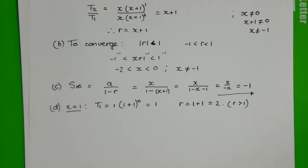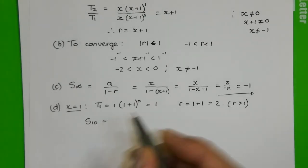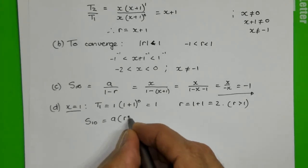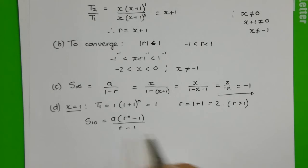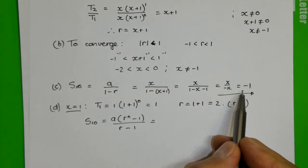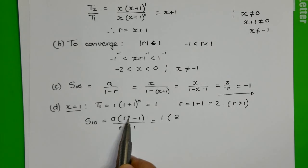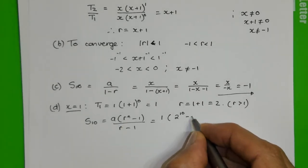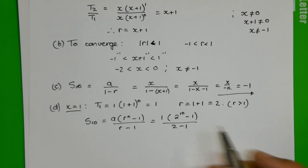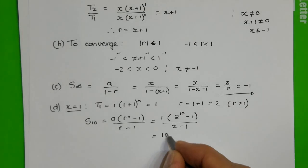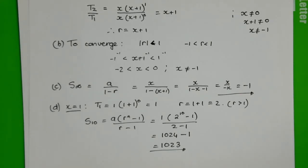So to find the sum to 10 terms, the sum to 10 terms will be the first term, r to the n minus 1 over r minus 1. The first term we found was 1. And then our constant ratio is 2. I want the 10 terms to be added. So my power is 10 minus 1 over 2 minus 1, and that leaves us with 1. So we've got 2 to the power of 10, and that is 1024 minus 1, and that gives me 1023 as my sum to 10 terms.